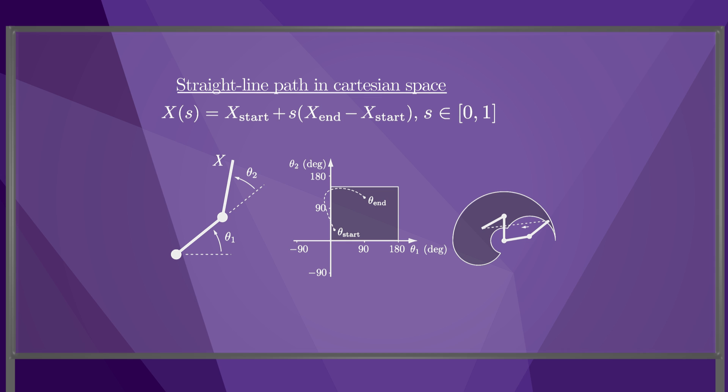One advantage of planning straight-line motions in joint space is that the joint limits are usually independent of each other, so the set of feasible joint configurations is convex, unlike the workspace. A straight line between two points in a convex space always remains inside the space.